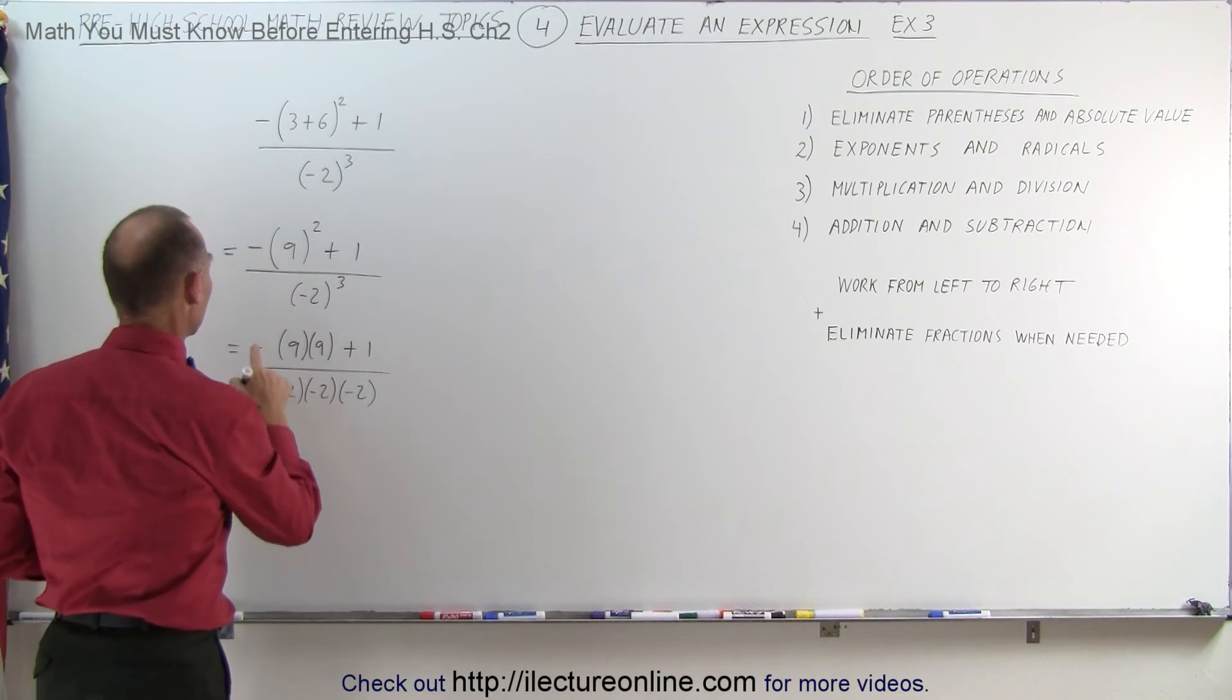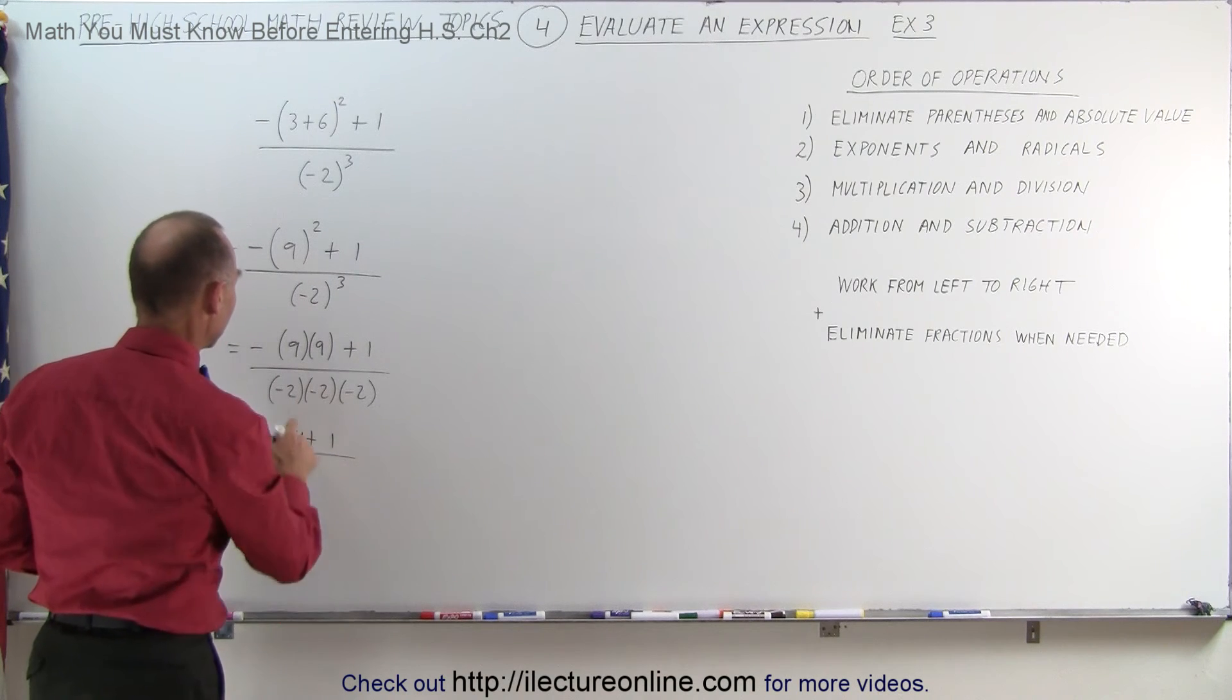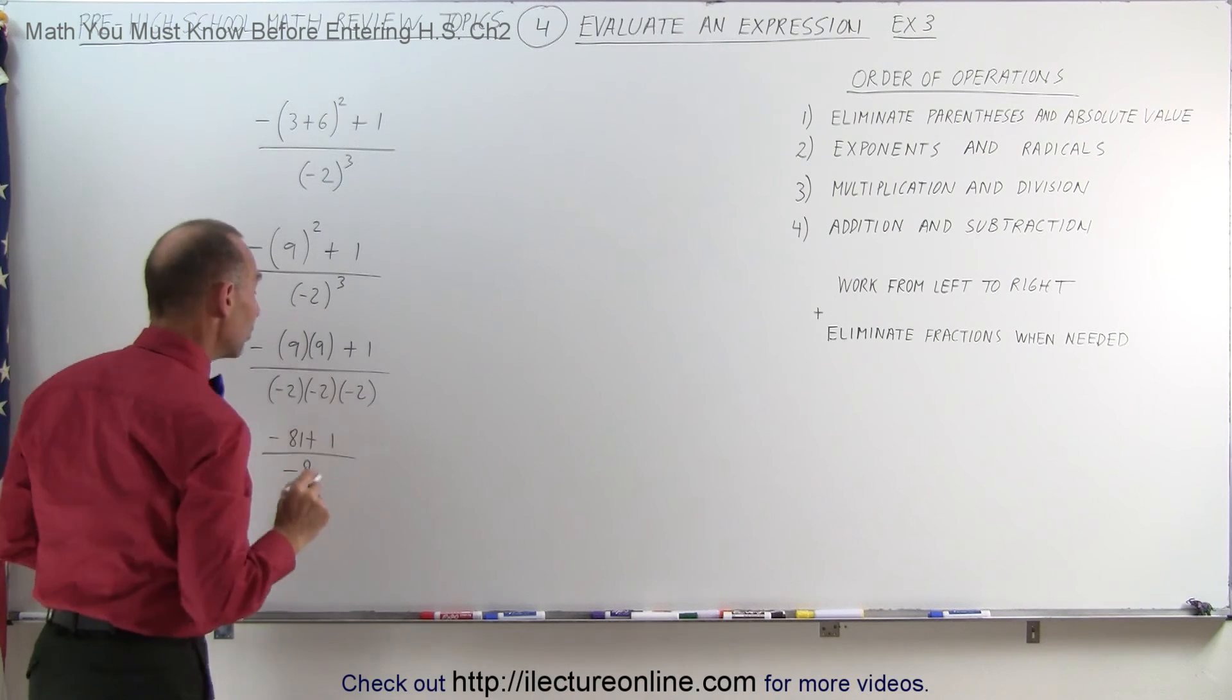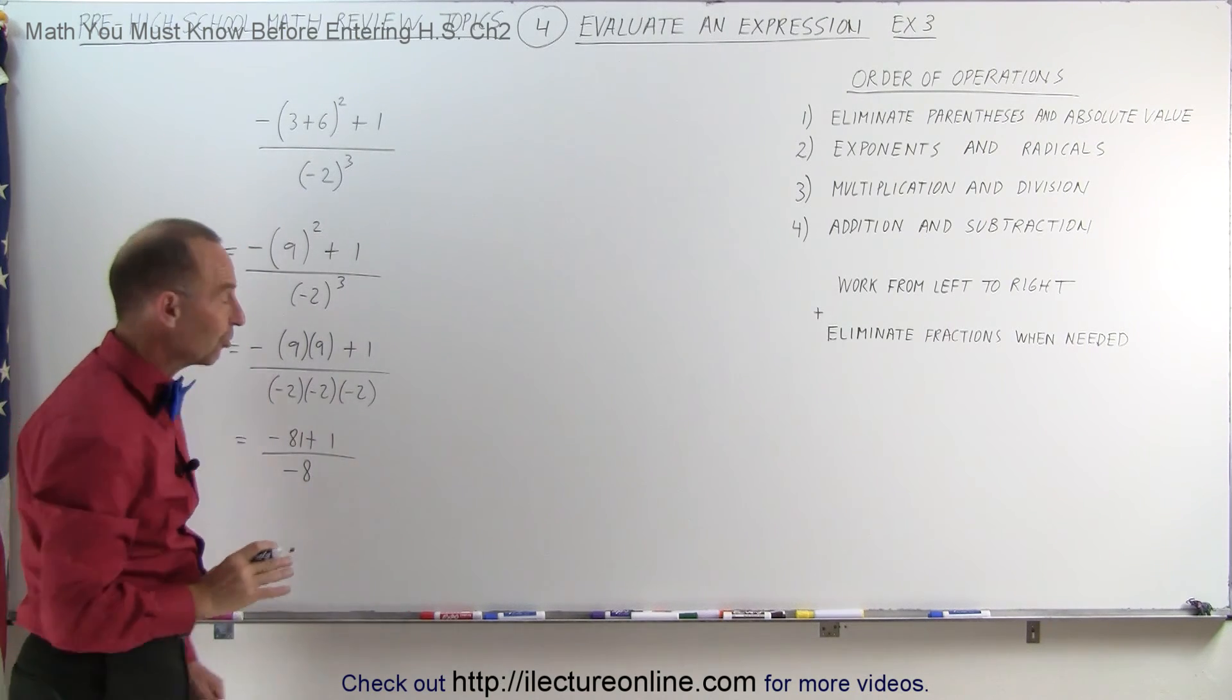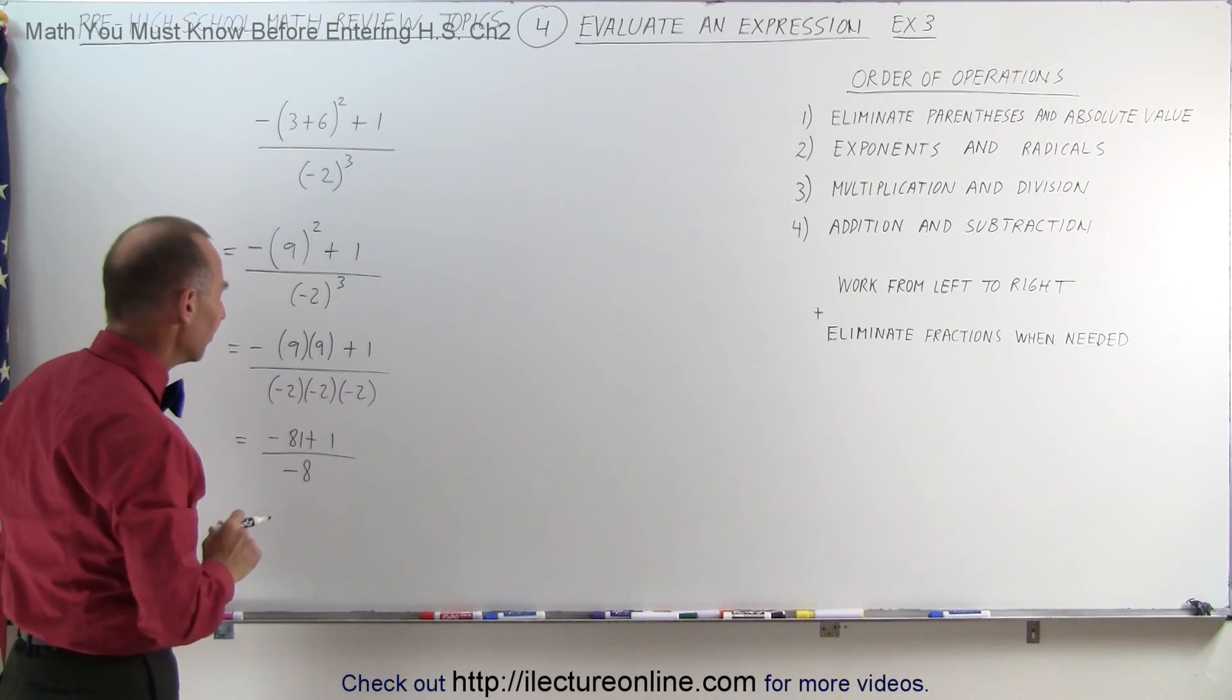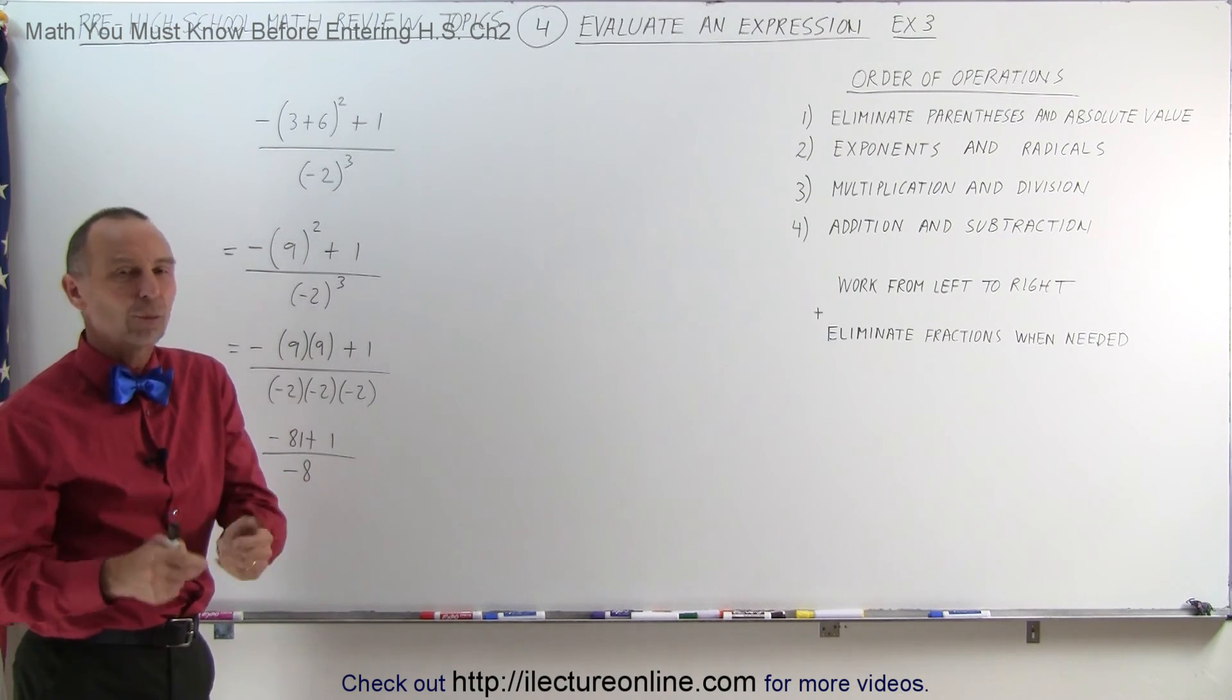So this becomes equal to negative 81 plus 1, divided by negative 2 times negative 2 times negative 2, which is negative 8. When you multiply three negative numbers together, that's an odd number of negatives, your answer will be negative. When you multiply an even number of negatives together, then the answer will be positive.